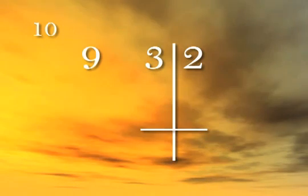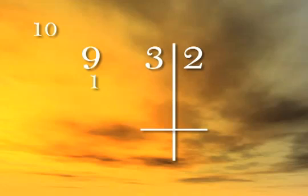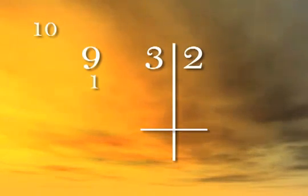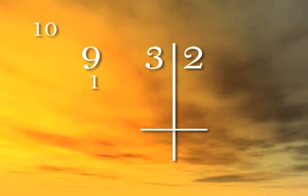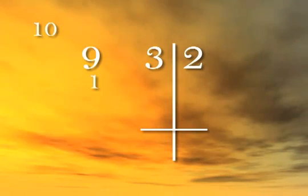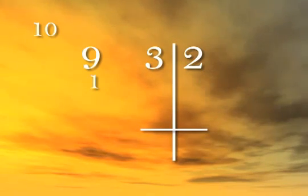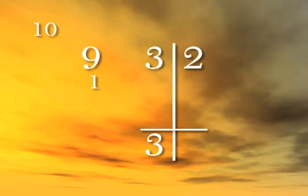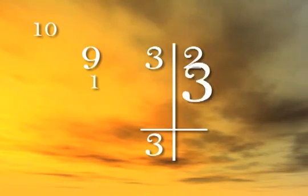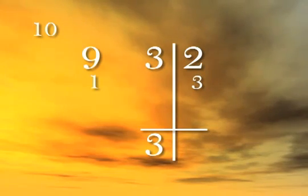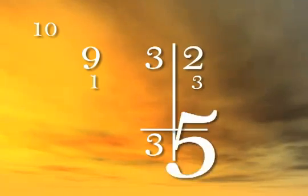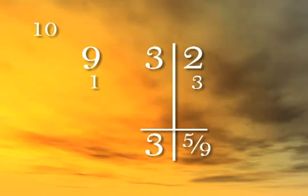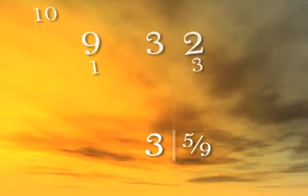Nine is one less than ten, so write one just under the nine. At each step, we'll be multiplying by the number one. Bring down the first digit, three. Three times one is three — write the three in the next column. Adding the next column, two plus three is five, so the remainder is five ninths and the answer is three and five ninths.